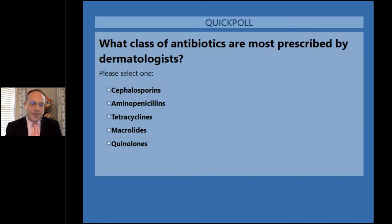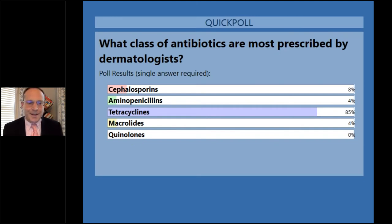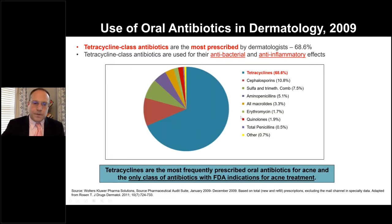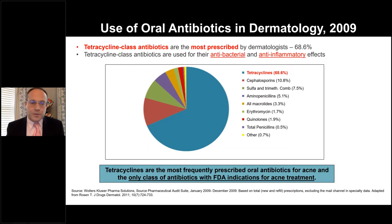Please select what you think the correct answer is: cephalosporins, aminopenicillins, tetracyclines, macrolides, or quinolones. The results showed 85% thought tetracyclines, with cephalosporins in second place. It turns out that the most prescribed antibiotics in dermatology are, in fact, tetracycline-class antibiotics — about 70% of all prescriptions. Cephalosporins came in second. Tetracyclines are the most frequently prescribed oral antibiotics for acne, and they are the only class FDA approved for acne treatment.